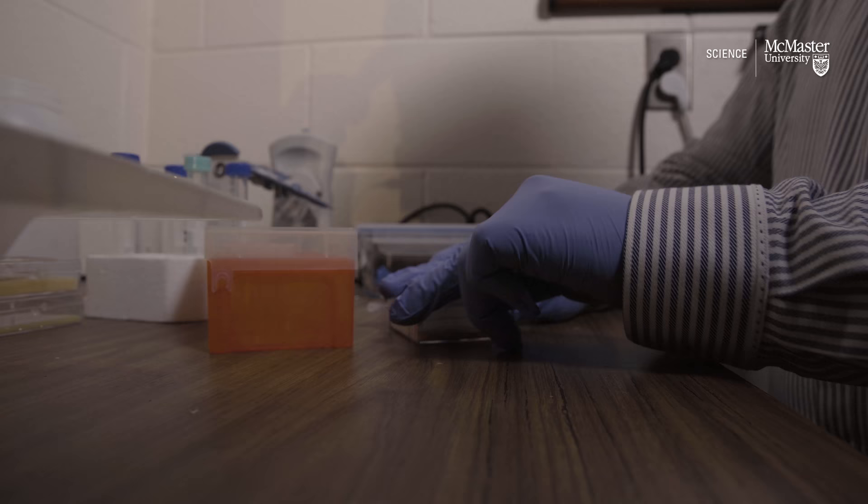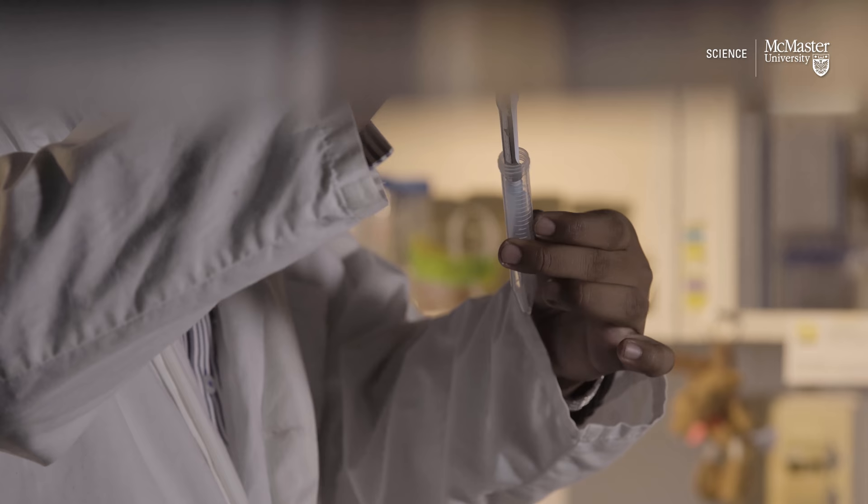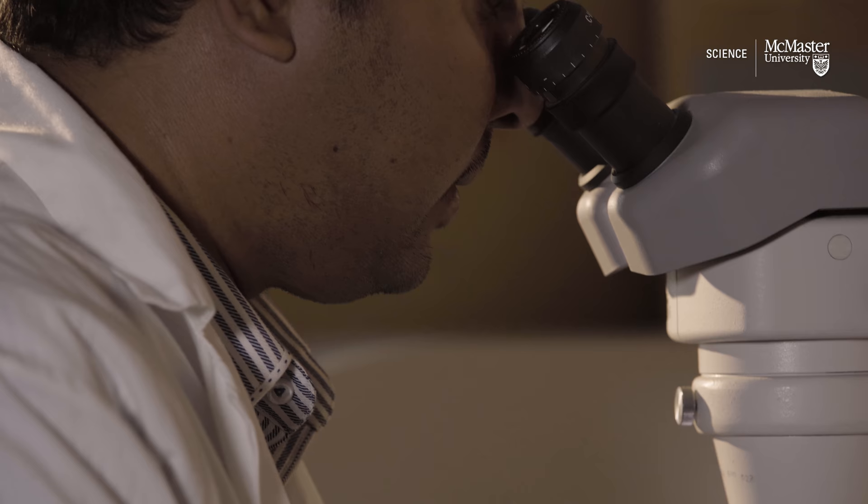C. elegans that we study in our lab are a great system because they're simpler, they're very small, they're transparent. They take about three weeks from fertilized embryo to adult and to die, so whatever experiments we do in this system we get the result rapidly and this allows us to translate the discovery.